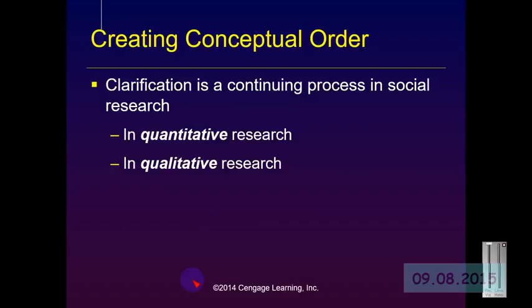Clarifying concepts is an important and ongoing part of any research process. The bulk of the clarification in quantitative research happens before the survey is shipped out and implemented, whereas in qualitative research, clarifying concepts is something that goes on throughout the research process — even through the report writing and publishing process, and beyond.